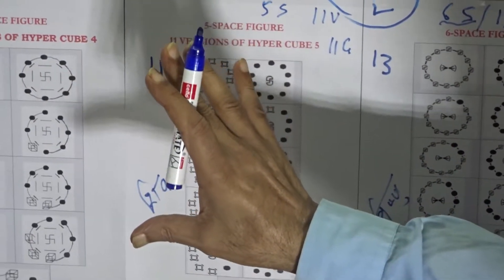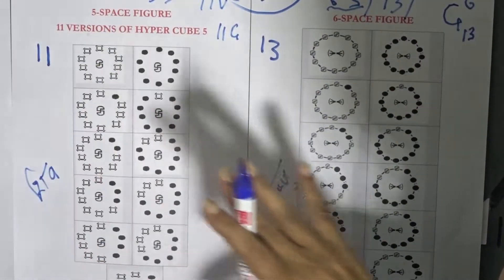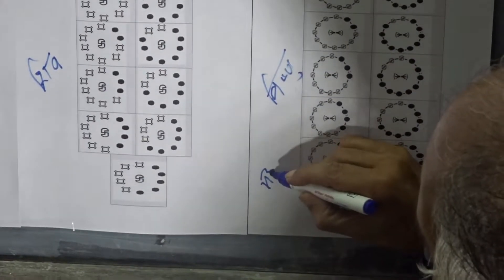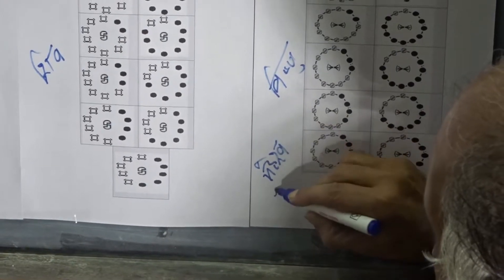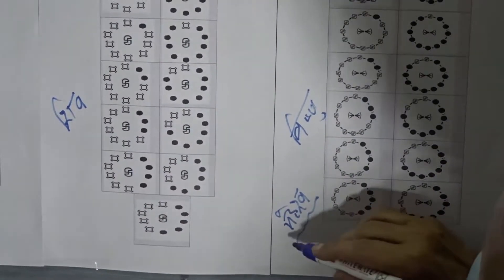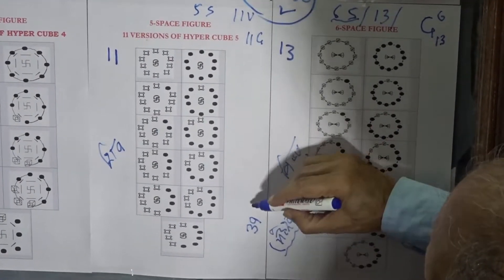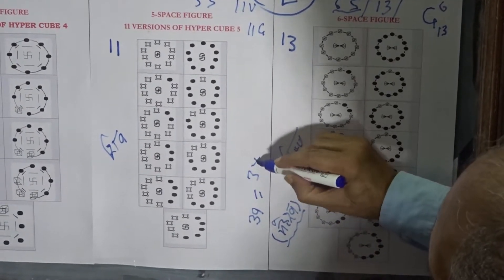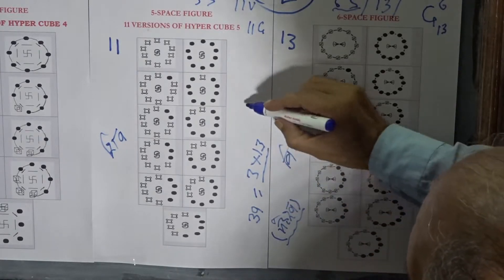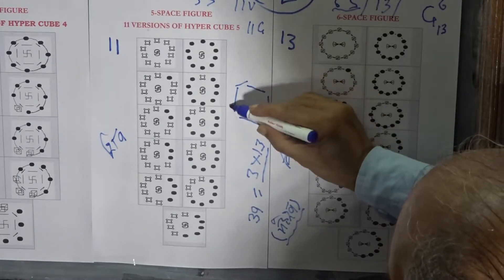This Shiv Sahasranam Stotram is being recited by Vishnu, and this recitation is as Maheshwar. Lord Vishnu is approaching Lord Shiv as Maheshwar. Maheshwar is a formulation of TCV value 39, and 39 is a value of 3 multiplied by 13. As such, the 13 value is within the creators of space — the whole phenomenon is happening within the creators of space.